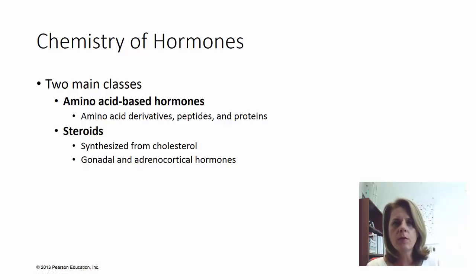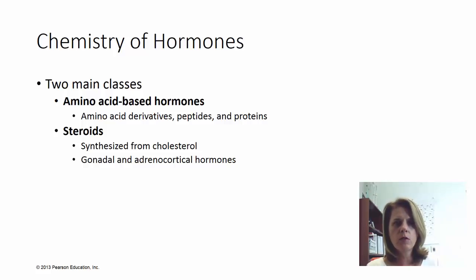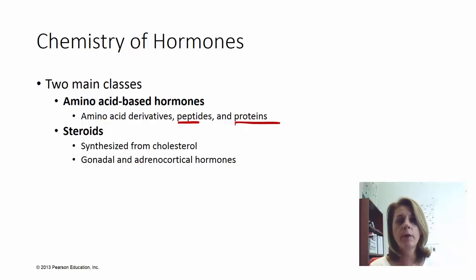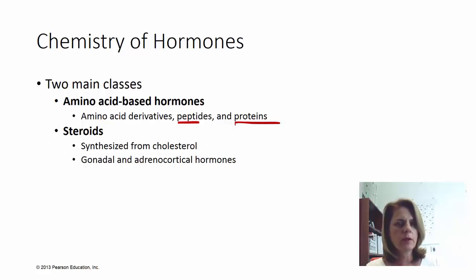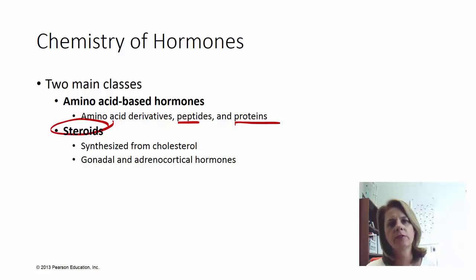When we think about hormones, they come in two main classes. There are amino acid-based hormones — remember, amino acids are the building blocks of proteins, so these can be small hormones made of a couple of amino acids or rather large fully-formed proteins. Then you have steroid-based hormones, which are derived from cholesterol — that's kind of the building block of steroid hormones.